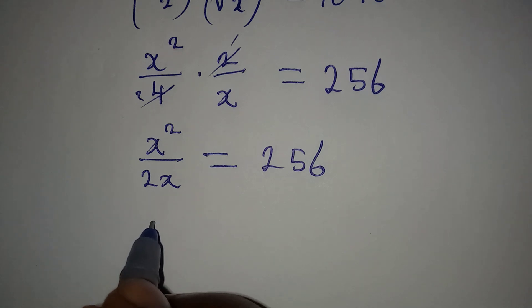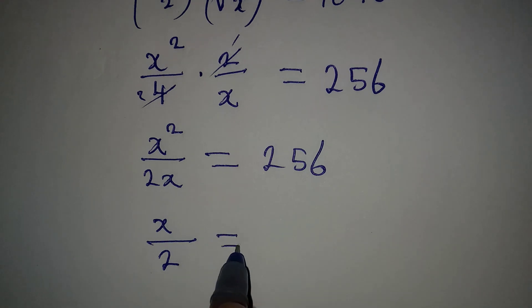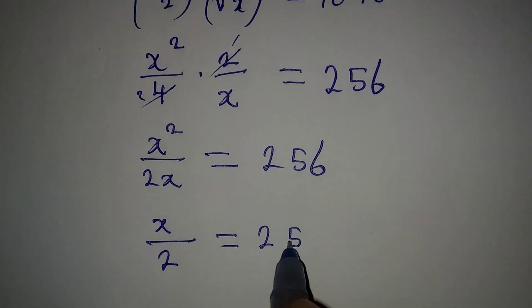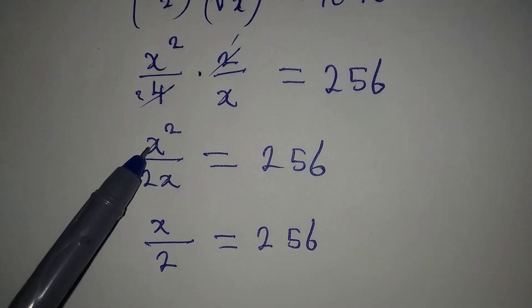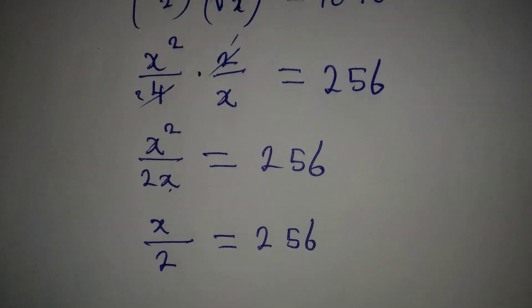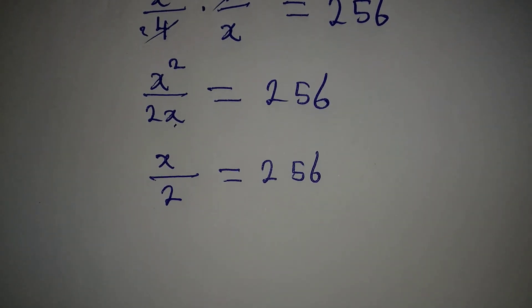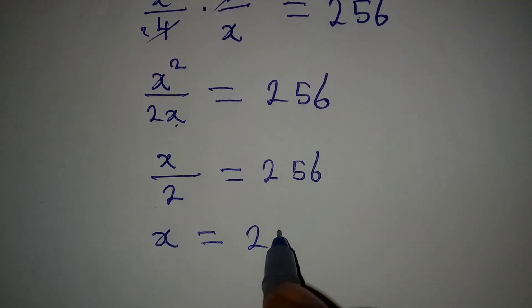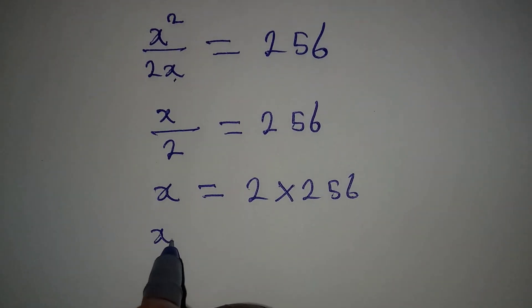Now from here, remember that this can also take away one of this. So if it does, then we'll be having x over 2 to be equal to 256. How did I get that? Remember here we have x times x, so this will cancel one of the x. Then we'll have 2 under. Now to get the value of x, we cross multiply, so x will be 2 multiply by 256.